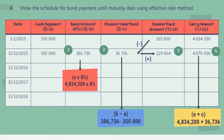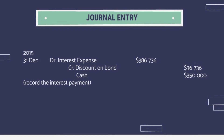The last step is to calculate the carrying amount at 31st December 2015 by adding the previous carrying amount to the amortized discount (column E plus column C), giving $4,870,936. The carrying amount keeps increasing until maturity. The journal entry at 31st December 2015 is: debit Interest Expense, credit Discount on Bond, credit Cash — to record the interest payment.